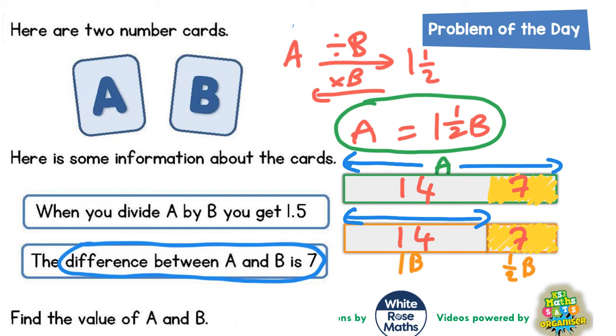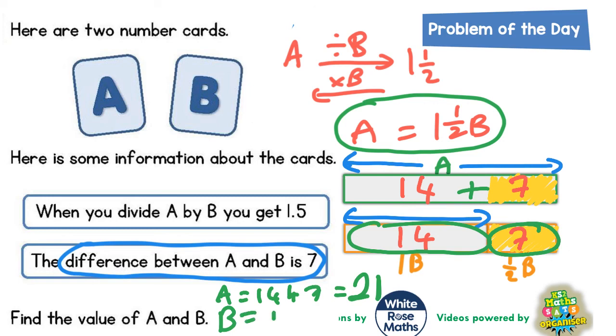Well A is basically going to be 14 plus the extra 7 on the end. So A is 14 plus 7, which is 21. And B is just the 14, because the 7 on the end is half of B. So 1B on its own isn't the extra 7 on the end, it's just the 14. So B is just 14. There's the final answer: A is worth 21 and B is worth 14.